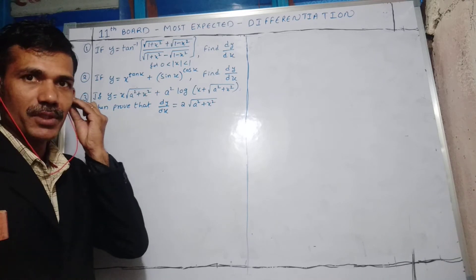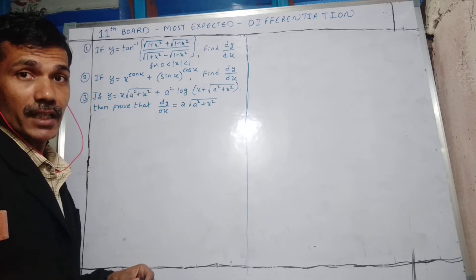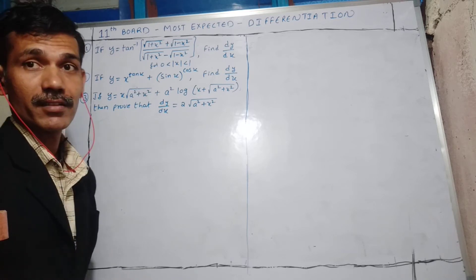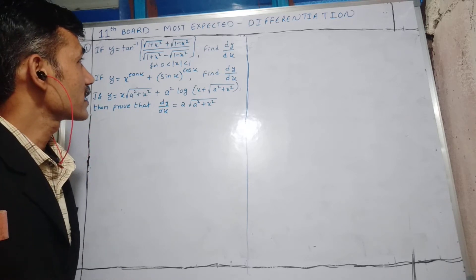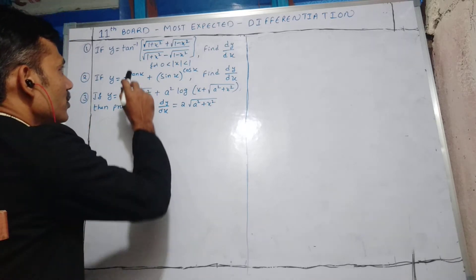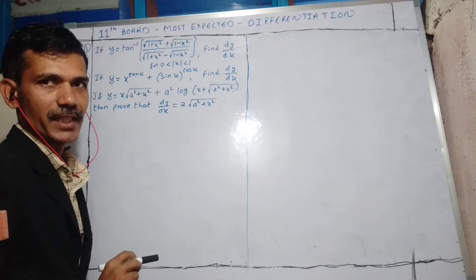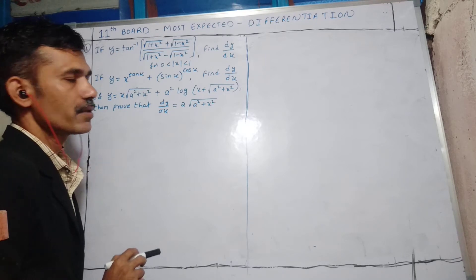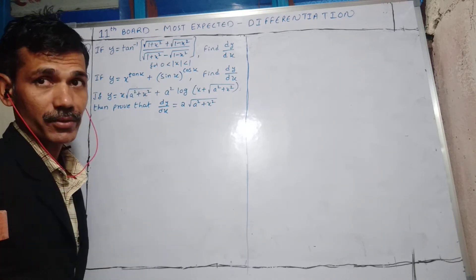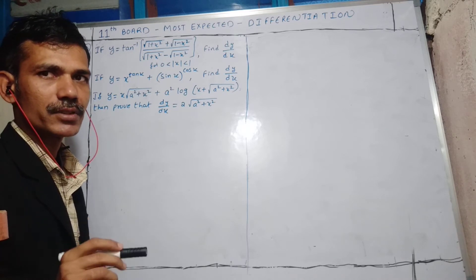First question: y = tan⁻¹ of [√(1+x²) + √(1-x²)] upon [√(1+x²) - √(1-x²)]. We have to find dy/dx. Directly we cannot do it — we have to do some substitution.